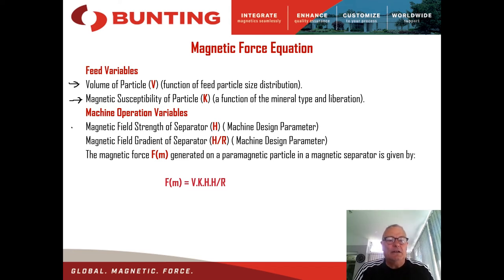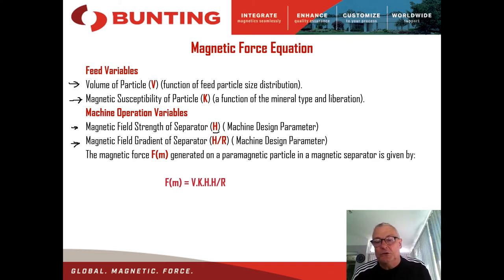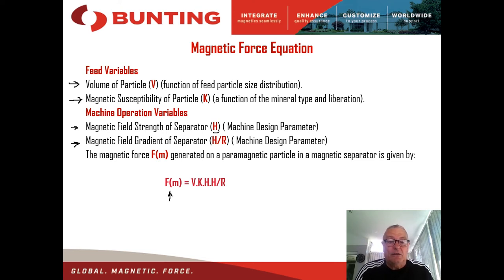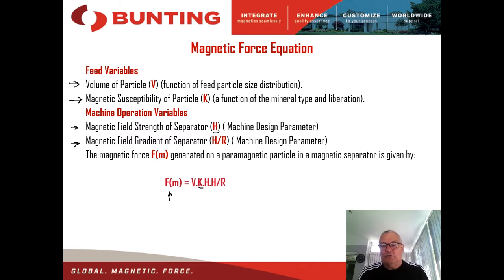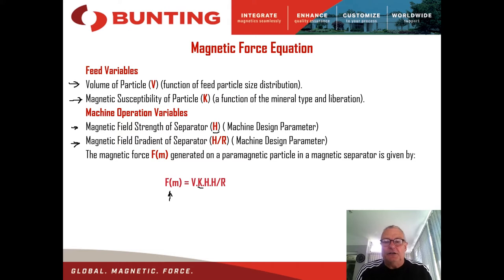At Buntings Redditch, we can control the magnetic field strength of the separator — H in the equation — and the magnetic field gradient, which is the rate of change of the magnetic field. The higher the field strength and the higher the field gradient, the greater the magnetic force we're going to have on a particle and the more efficient the separation will be. For any particle entering our disk separator on the belt, the magnetic force imparted on it is proportional to its volume, its magnetic susceptibility given by the geological history of the mineral, the field strength, and the field gradient. The higher the magnetic force, the greater the chance of capture of the magnetic particle and its separation from the non-magnetic feedstock.